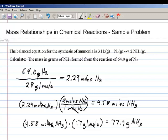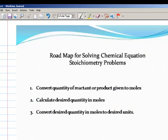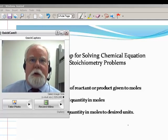All problems like this can be solved using the same basic roadmap. We just convert the quantity of reactant or product that we're given to moles. Then calculate the desired quantity in moles. And then convert that answer to desired units. And we're done. One, two, three. All chemical equation stoichiometry problems of this nature can be solved in exactly the same way. And that's all there is to it. Good luck with your assignments.